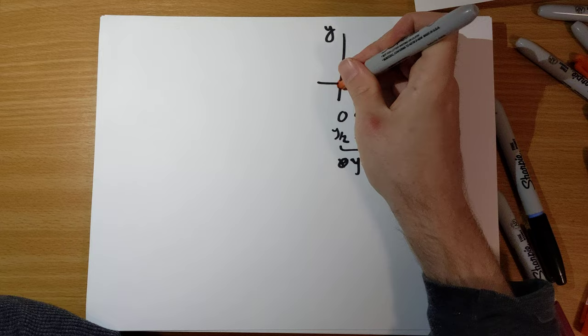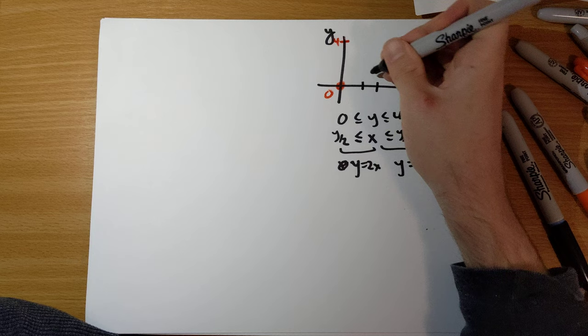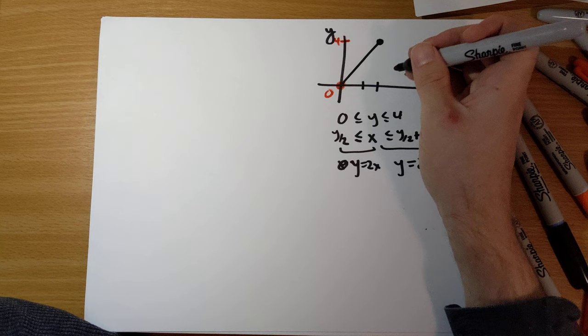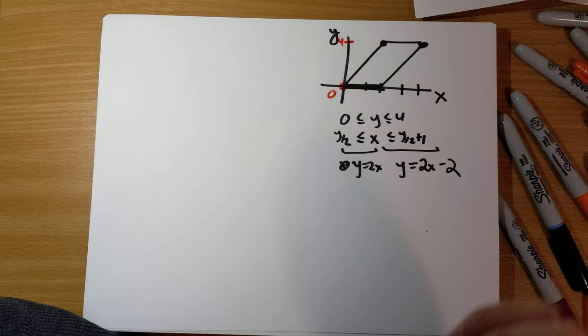y is equal to 0. y is equal to 4. x is equal to y over 2. That's y is equal to 2x. Okay, so this is y is equal to 2x. y is equal to 2x minus 2. It looks like this. And so the region in question is this parallelogram. This is our region R.